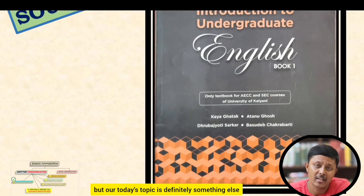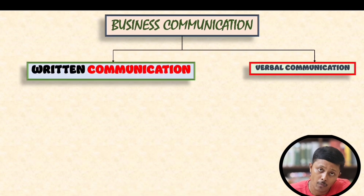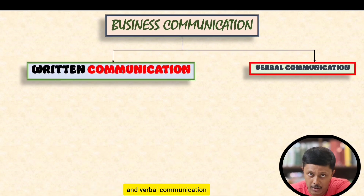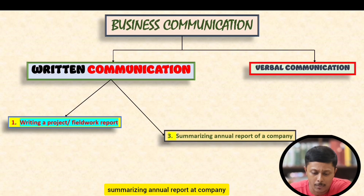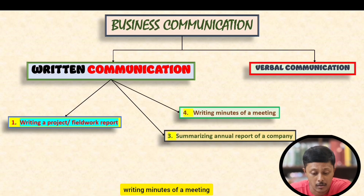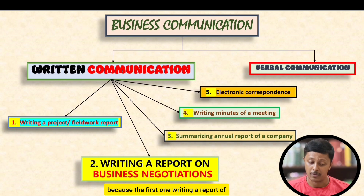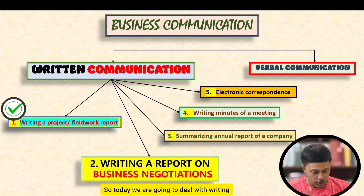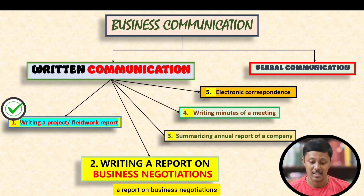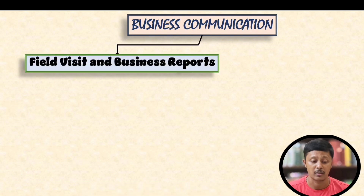Today's topic is the business communication part, specifically written communication and verbal communication. In written communication there are five parts: writing a project field work report, summarizing annual reports, writing minutes of a meeting, electronic correspondence, and writing a report on business negotiations. This second item is today's topic, as we have already completed the first one.